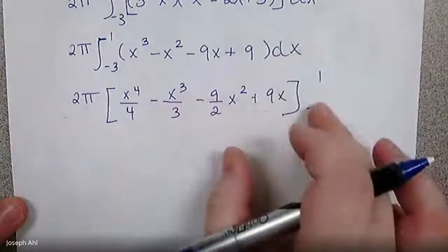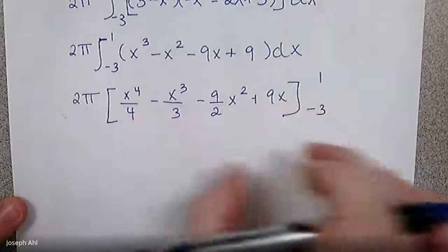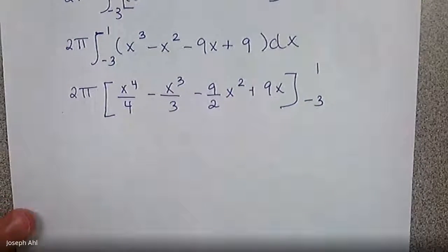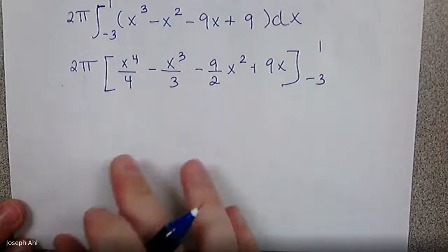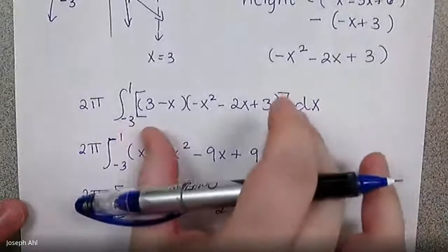Plug in your upper bound of one for everything, plug in your lower bound of negative three, subtract those results. There's just a lot more computation to come here if you're going to do this by hand. But what am I most concerned about in this process? Of course, that you can get this set up right here.